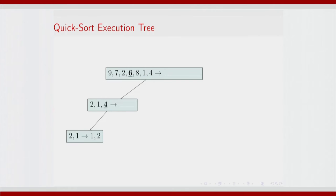With 4 as the choice of the pivot element, you will get all the other elements of this subarray to be the sub-subarray to be partitioned. There is nothing more to do here — just 2 elements.